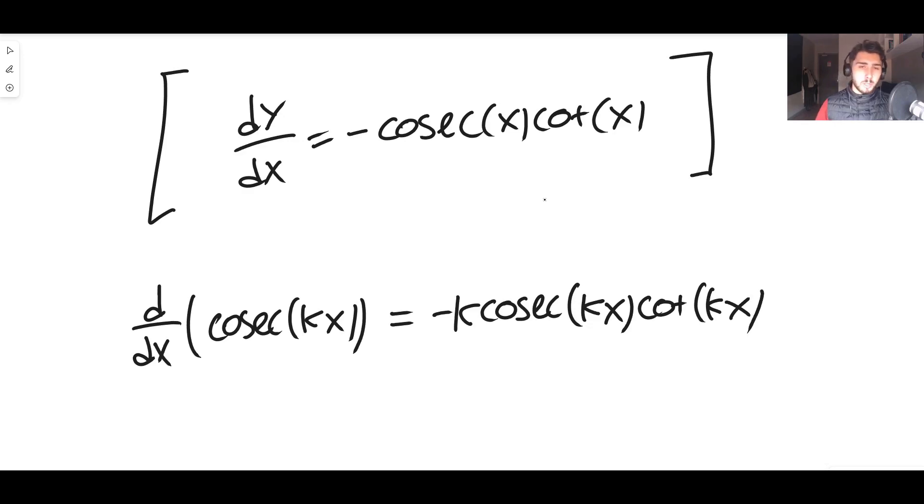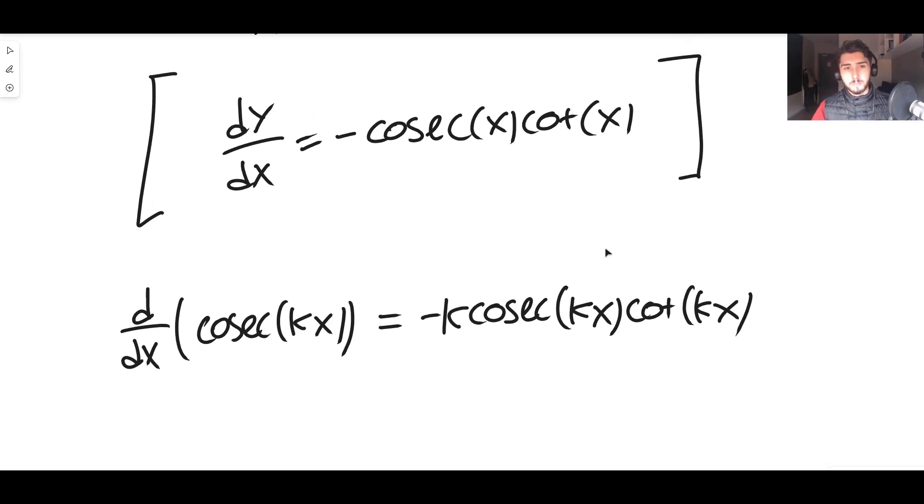So if you wanted to differentiate cosec of 2x, it would be minus 2 cosec(2x)cot(2x), for instance. But it doesn't matter what k is—k can be any value. So these are essentially the two things that you need to know for differentiating cosec(x). Thank you guys so much for watching. Highly appreciate it, and I'll see you in the next video.